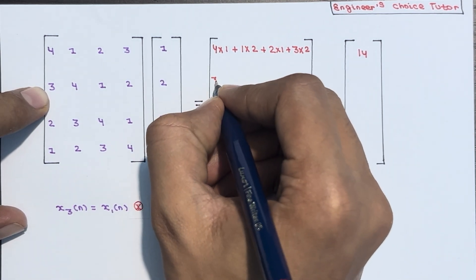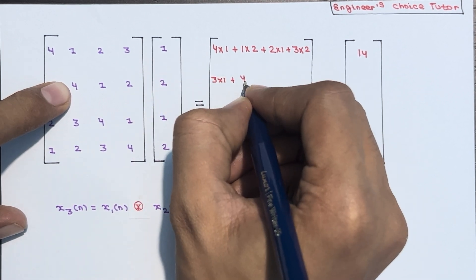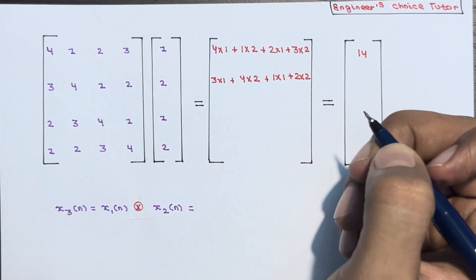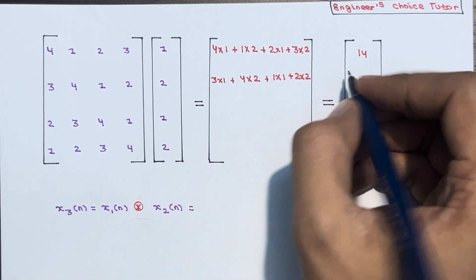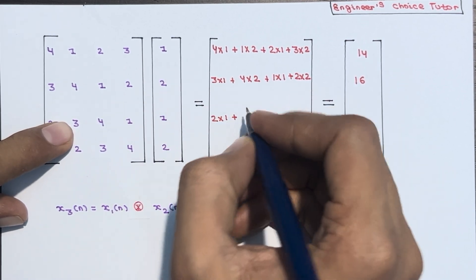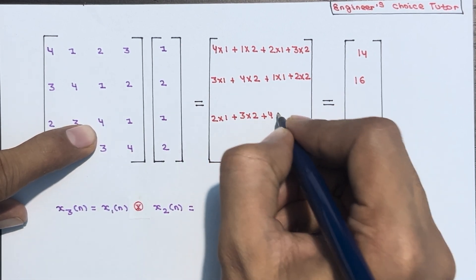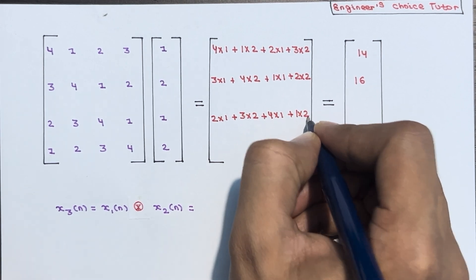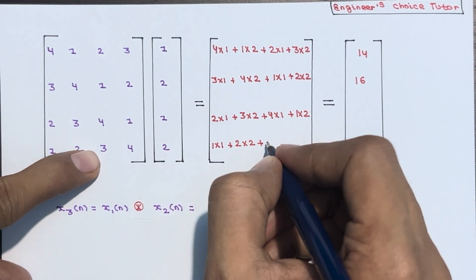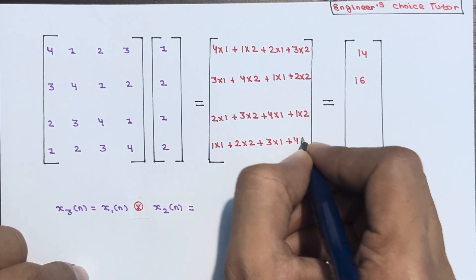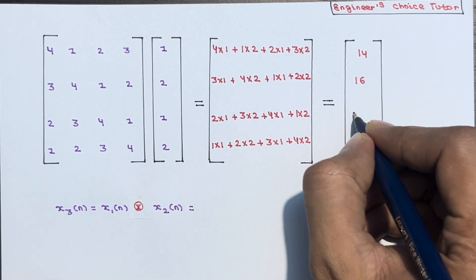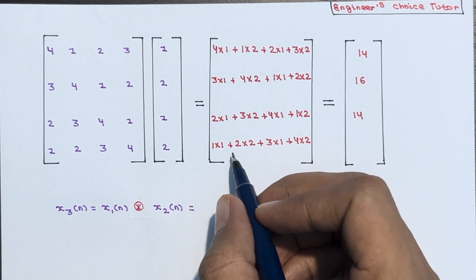For x3[1]: 3×1 + 4×2 + 1×1 + 2×2 = 3 + 8 + 1 + 4 = 16. For x3[2]: 2×1 + 3×2 + 4×1 + 1×2 = 2 + 6 + 4 + 2 = 14. For x3[3]: 1×1 + 2×2 + 3×1 + 4×2 = 1 + 4 + 3 + 8 = 16.